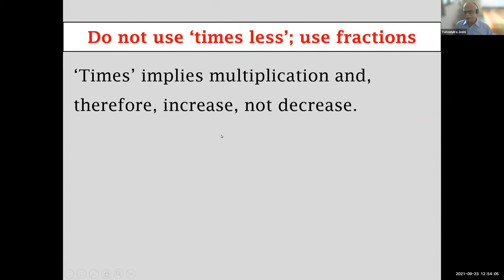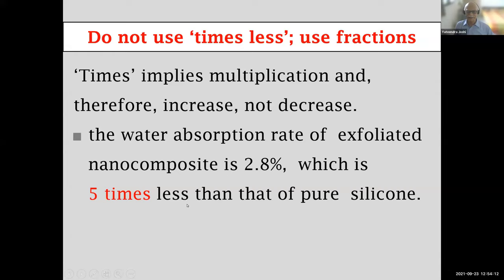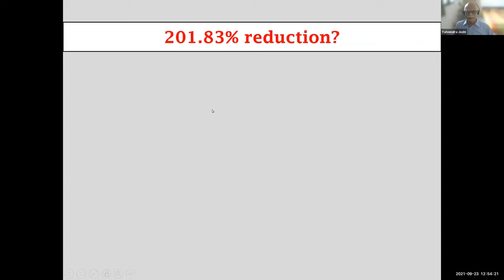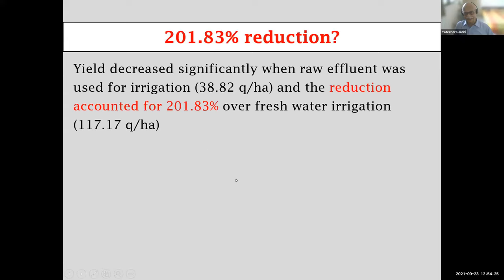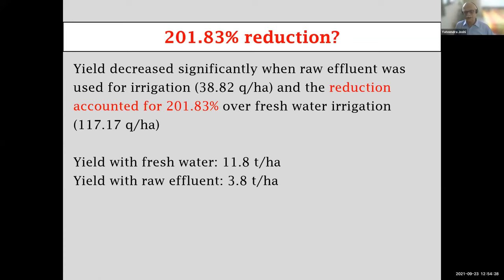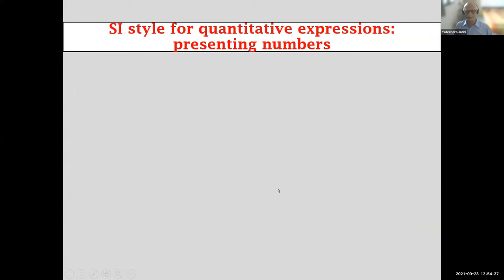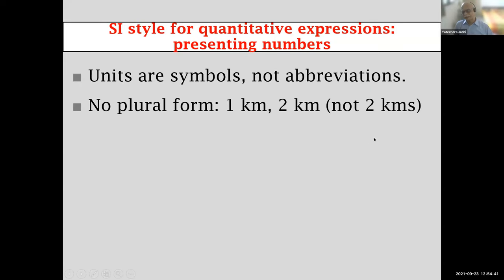When expressing a decrease, do not use 'times' — you cannot say something is 'five times less.' Instead say 'one-fifth' or '20%.' SI units are symbols, not abbreviations — they have no plural forms. Never write '2 kgs'; whether it is 2, 5, or 50, it is always 'kg,' never 'kgs.' Do not put a dot after a unit symbol unless it falls at the end of a sentence.